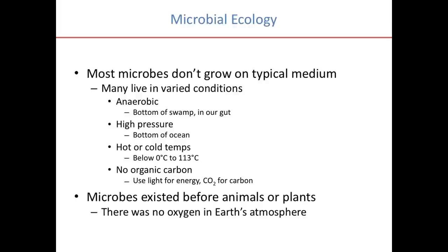Microbes live in a variety of conditions. They live in anaerobic conditions — devoid of oxygen — such as the bottom of a swamp and in our gut. They can live at very high pressure at the bottom of the ocean. They can live at temperatures from below zero degrees Celsius to over 113 degrees Celsius. And some don't use any organic carbon at all — they can use light for energy and carbon dioxide for their carbon.